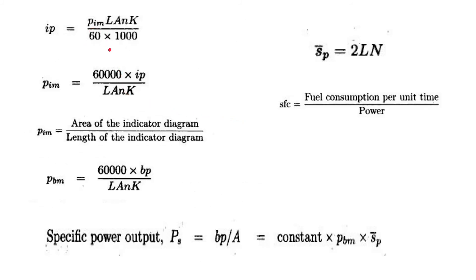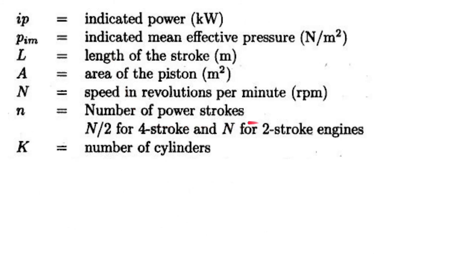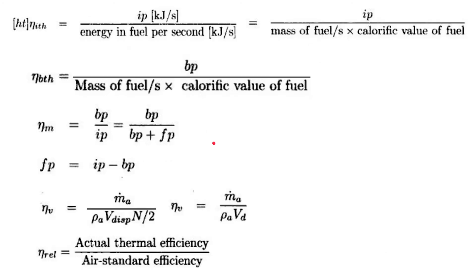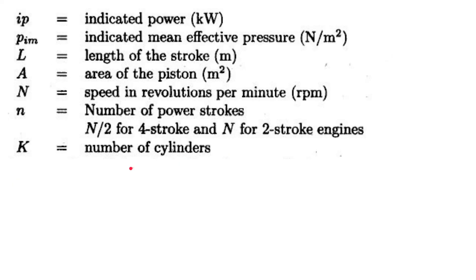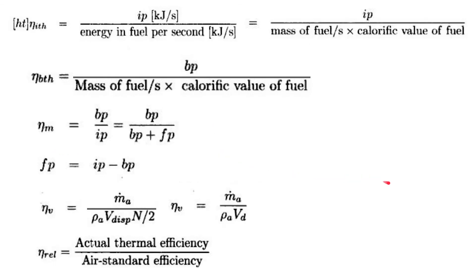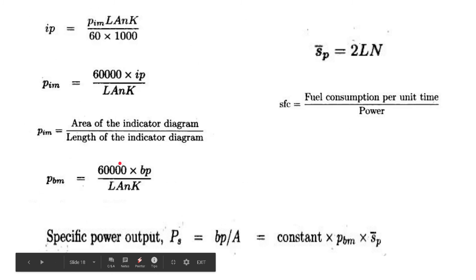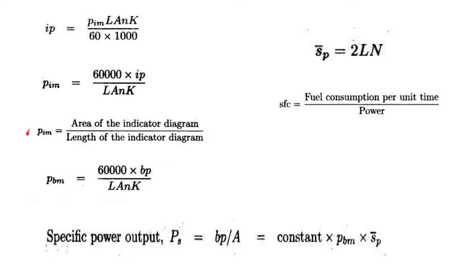Number of power strokes also means number of cycles, and the conversion from cycles per minute to per second involves dividing by 60. IMEP is also defined as the area of the indicator diagram (the P-V diagram) divided by the length of the indicator diagram, which corresponds to the displacement volume. This ratio gives the indicated mean effective pressure, and this formula is used to solve textbook problems.